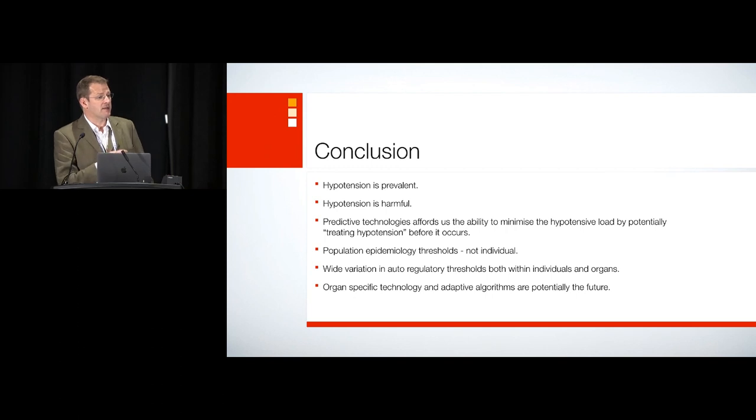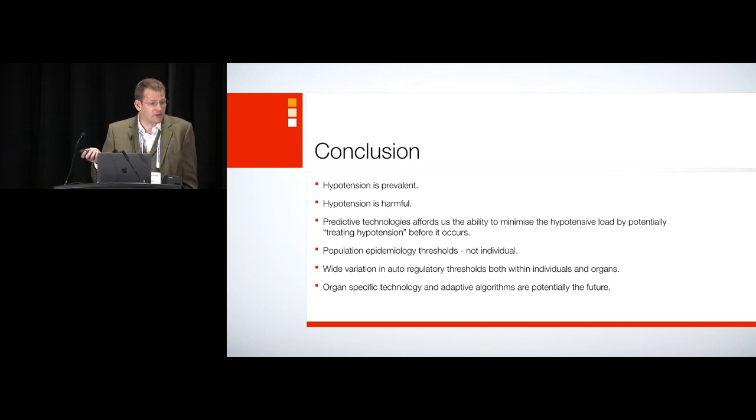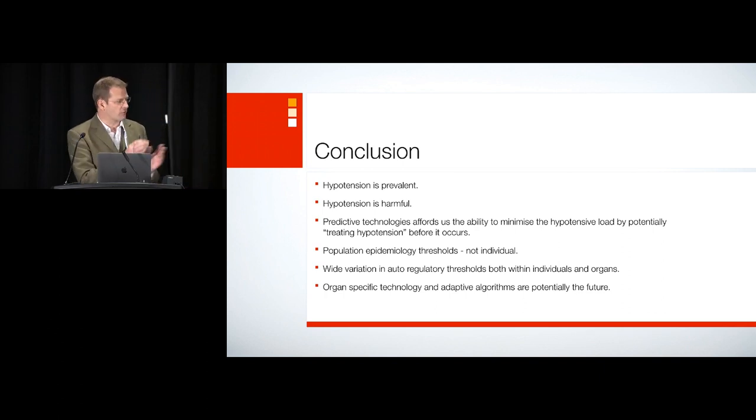So I hope what I've shown you is that hypotension is both prevalent and harmful and we can use predictive technologies to minimize the hypotensive load. We are limited by population epidemiology at the moment but that will change. And the wide range of the autoregulatory threshold that Greg showed us means we have to move our technology forward into these adaptive algorithms that are pulling information from different organ systems. We're just not quite there yet but that technology is developing and machine learning will be the future. Thank you very much for your time.